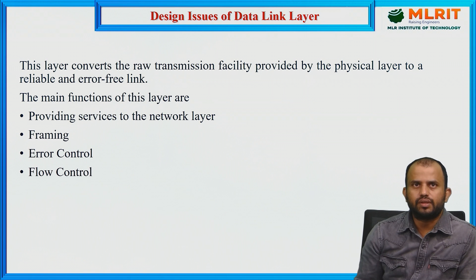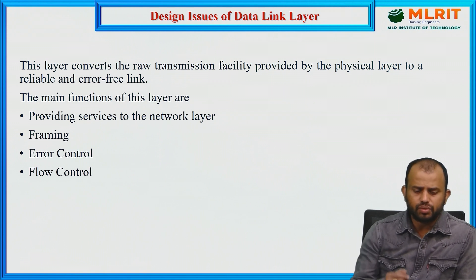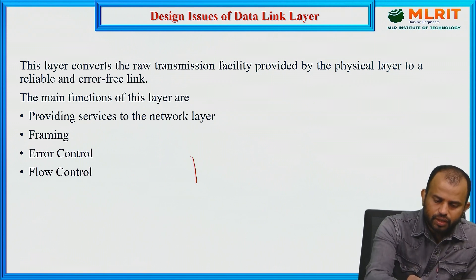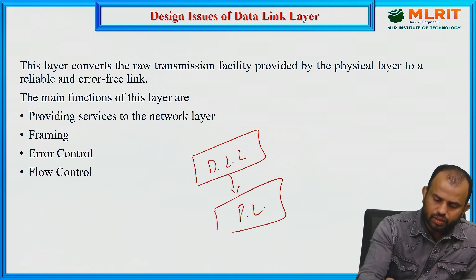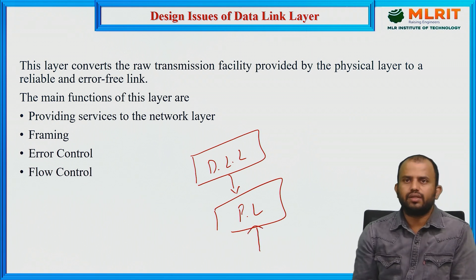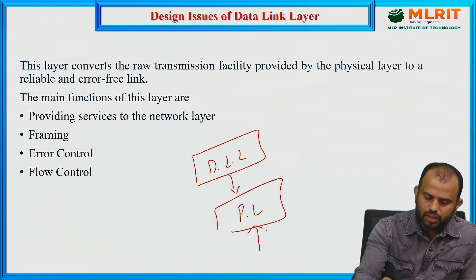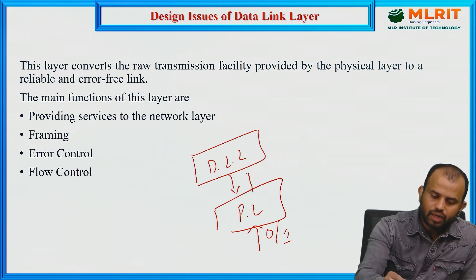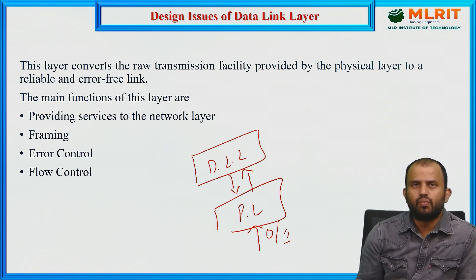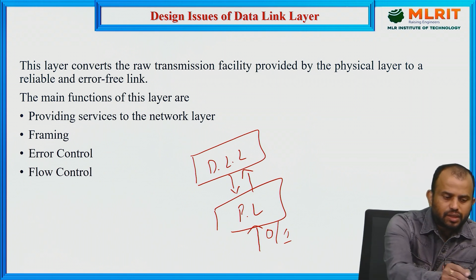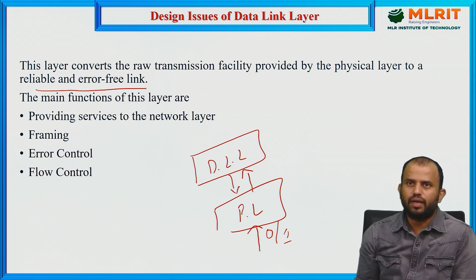We have a data link layer and a physical layer. In the receiver section, the information received from the source section comes through the physical layer as 0s and 1s, and this information is transmitted to the next layer which is the data link layer. The data link layer converts the raw transmission provided by the physical layer and also provides a reliable and error-free link.